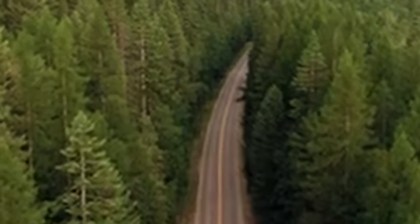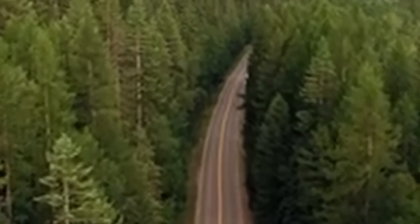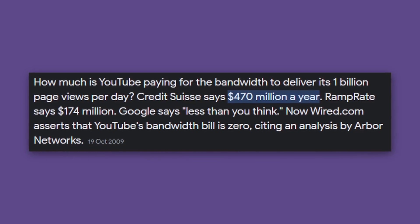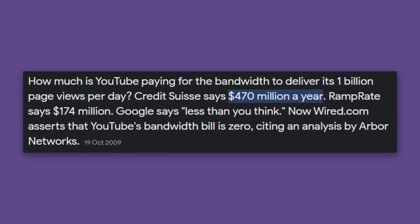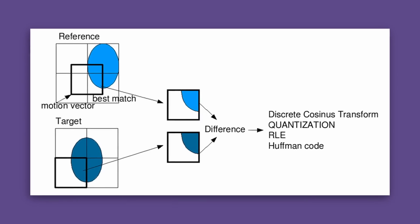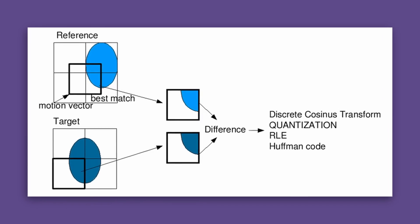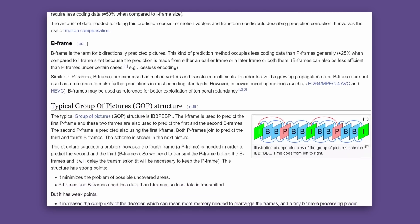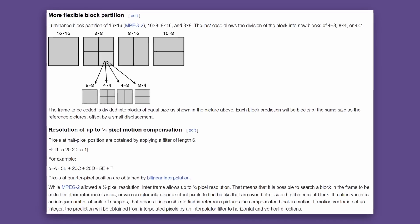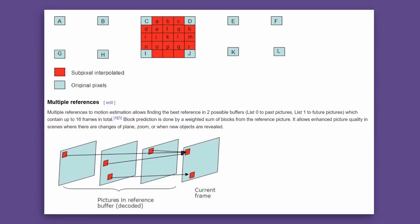On the other hand, lossy compression takes away data, reducing the quality of an image or a video in order to save space. This is the type of compression that YouTube can take advantage of. Before going into the compression methods, note that these are simplified, and explaining the mathematics and logic behind these would take hours.